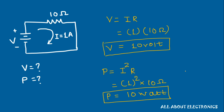Using Ohm's law, we can find voltage, power, current, and resistance in any electrical circuit if we know any two of the parameters. I hope you understood what Ohm's law is and how to use it to find the four different parameters. If you like this video, please hit the like button and subscribe to this channel for more such videos.